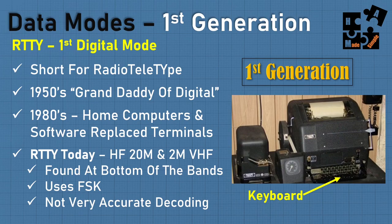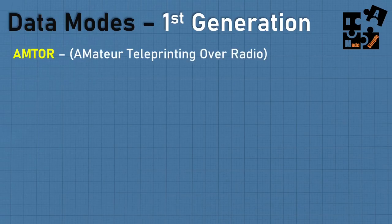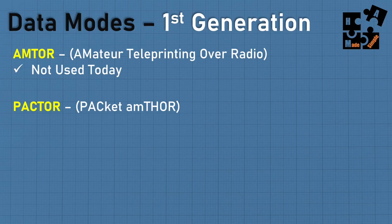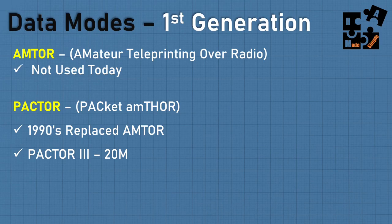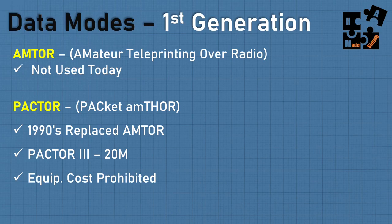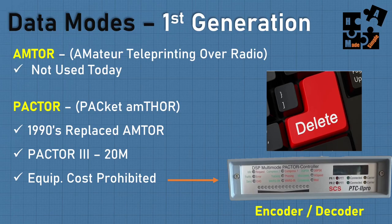The next generation brought Amtor — really not used today, so just pass on that one. Pactor came in the 1990s, and Pactor 3 is still used today — 20 meters has high activity. But for most of us, disregard it because the equipment cost is prohibitive. You need an encoder/decoder device, which makes it too expensive. There are much better modes available today that are free.